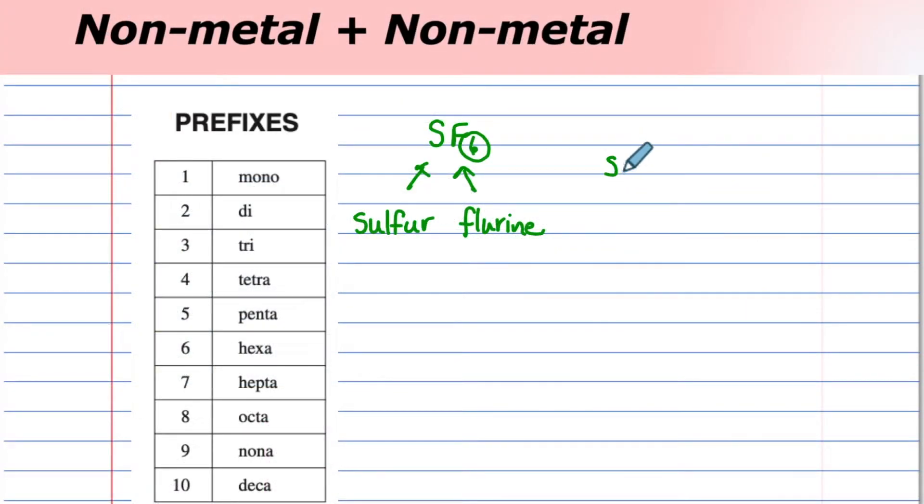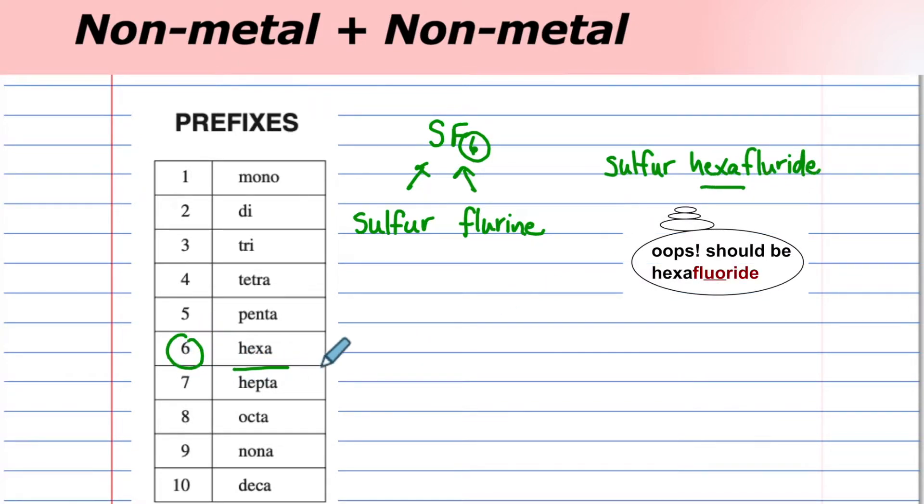Sulfur and fluorine, both non-metals. We would write sulfur hexafluoride. Hexa comes from the prefix for 6, and we change ine to ide.